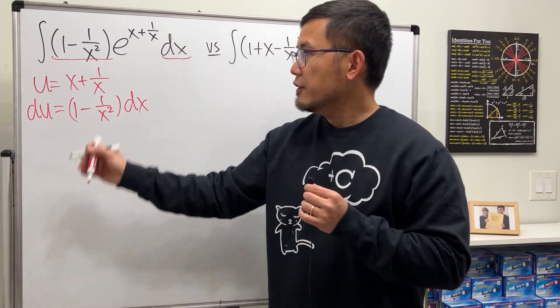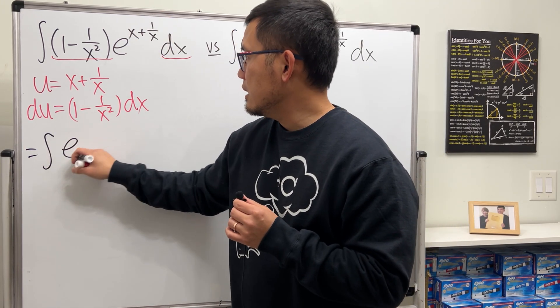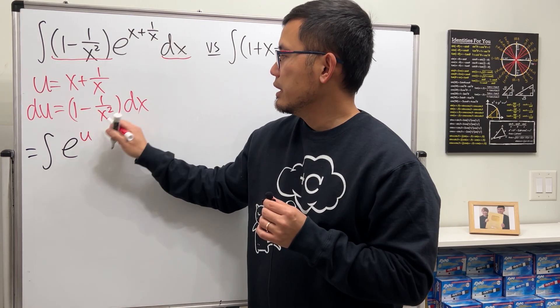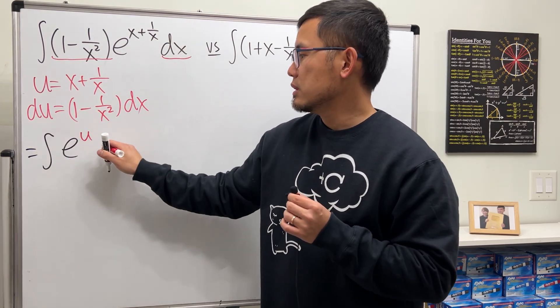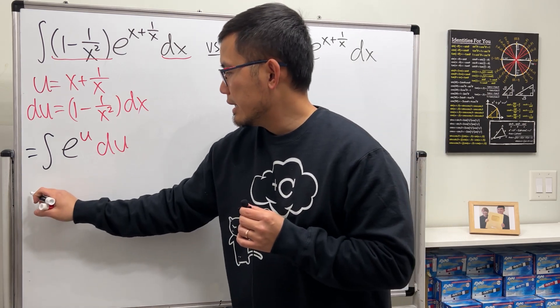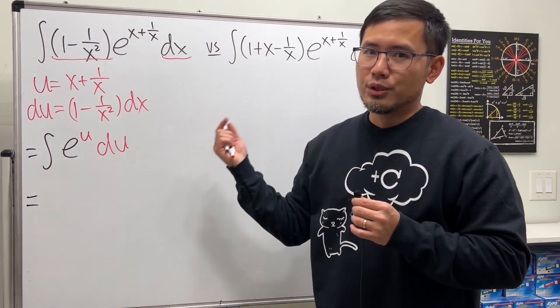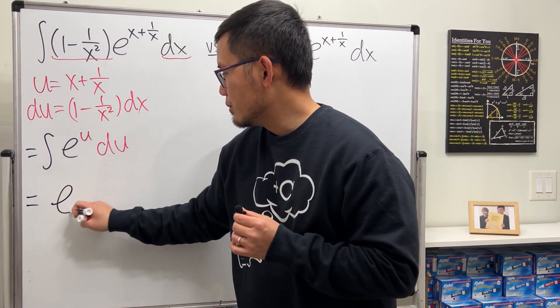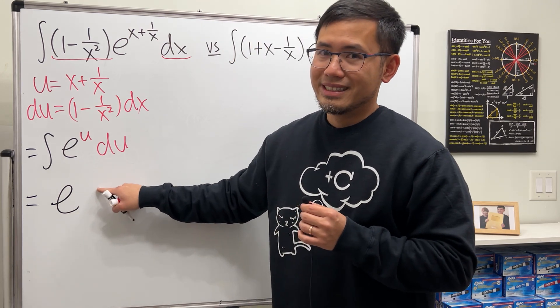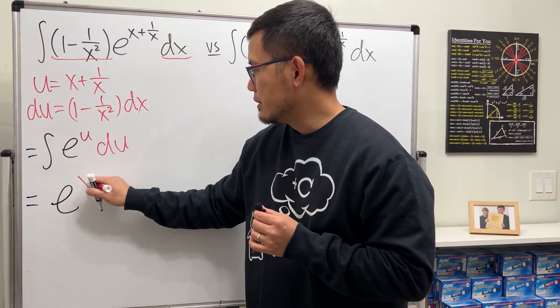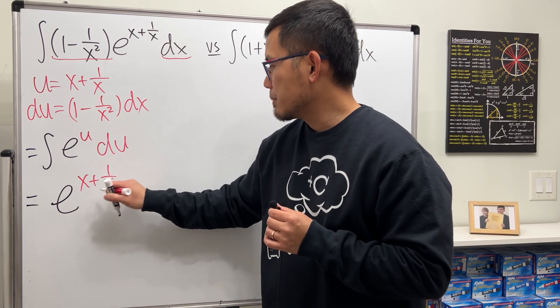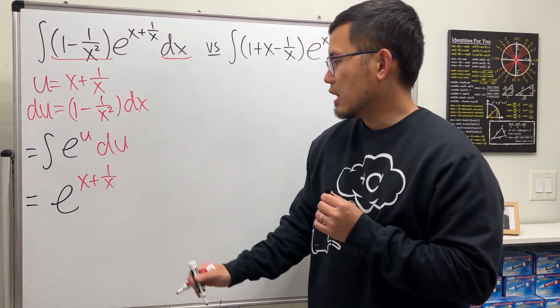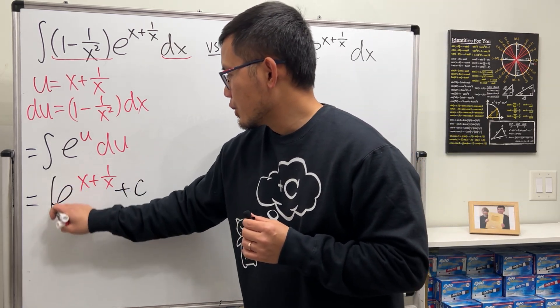So as you can see, this and that together is our du. Therefore, this is just the integral of e^u in the u world. Cool. And then the integral of e^u is just e^u, so we have e^u. And u is what? u is that. So let's put down e^(x + 1/x) and we are done plus C. Cool.